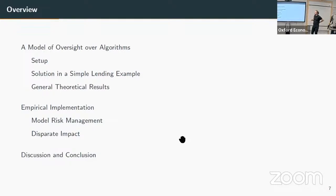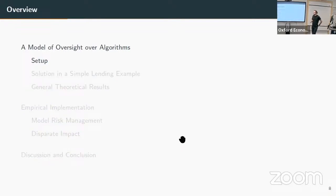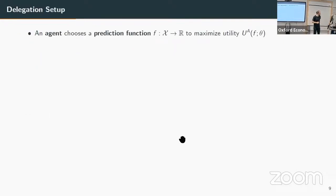Let me now go into the model. The talk is structured to show you the general model, then the solution in the simplest possible example to be transparent about what's going on. If I have time I'll show general theoretical results. I'll then show an empirical implementation on a large credit bureau dataset and put this in the context of AI regulation discussions. So: the general setup is that there is some agent whose choice is a prediction function—some mapping from covariates to some outcome.